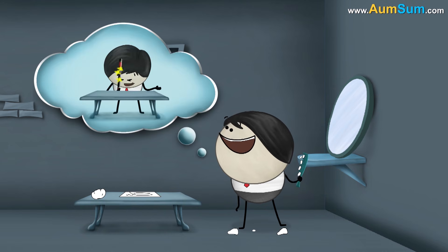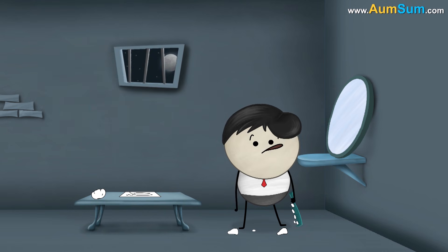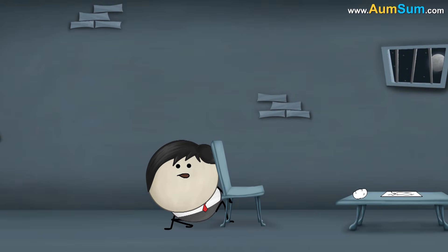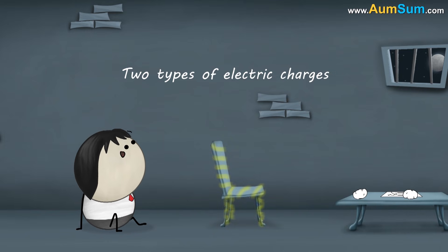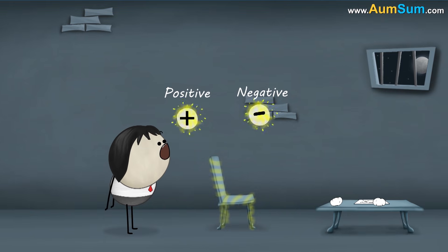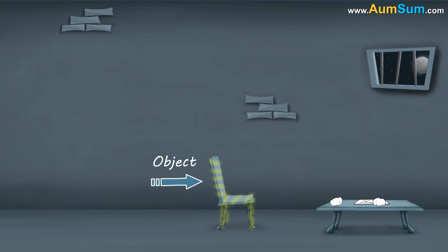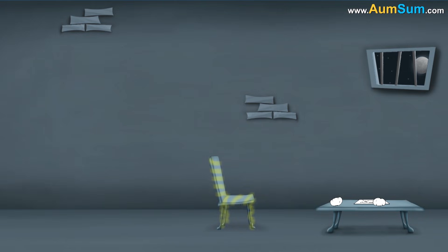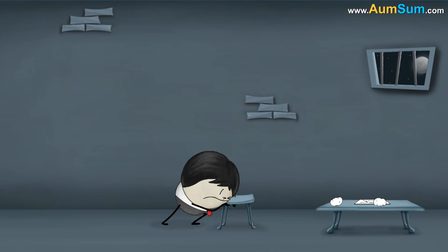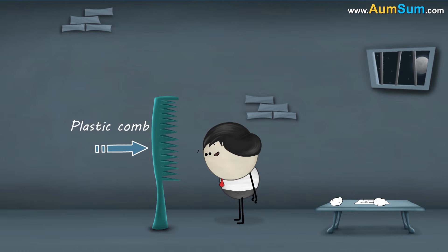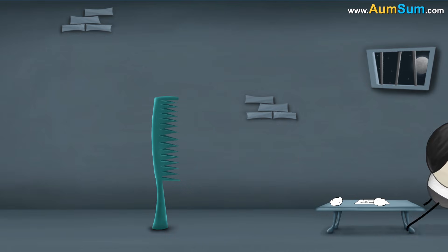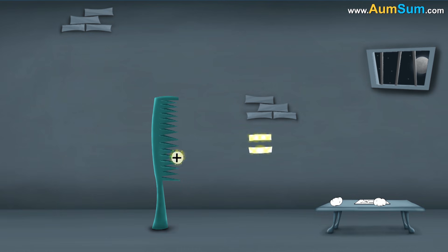Do you think it is magic? No. The reason behind this is electric charge. Electric charge is the quantity of electricity held in an object. There are two types of electric charges, positive and negative. However, there are some objects where the positive and negative charges are equal to one another. In such cases, we say that the object is electrically neutral. Initially, the plastic comb was electrically neutral, meaning it had an equal number of positive and negative charges.